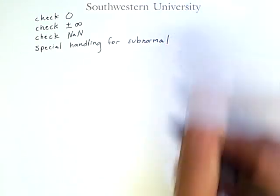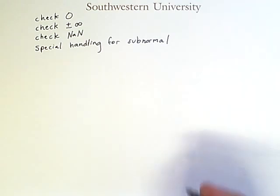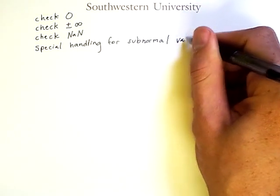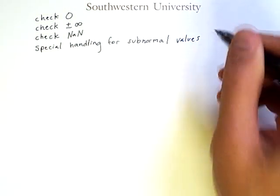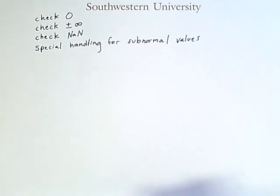Things get more complicated if you have a subnormal or denormalized number. Remember, these are extra small numbers whose representation has a zero before the binary point in the significand instead of a one. So they're not normalized, they're denormalized or subnormal in the representation.